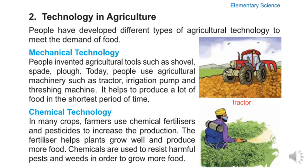Chemical Technology: In many crops, farmers use chemical fertilizers and pesticides to increase production. The fertilizers help plants grow well and produce more food.